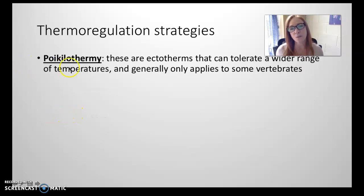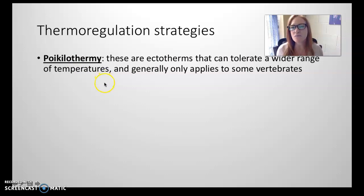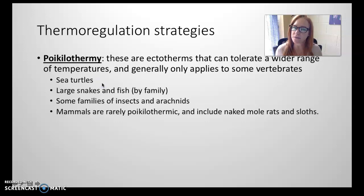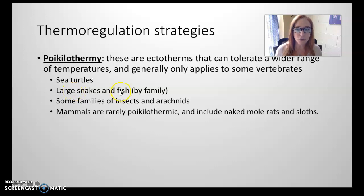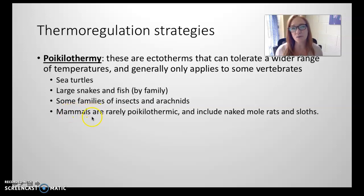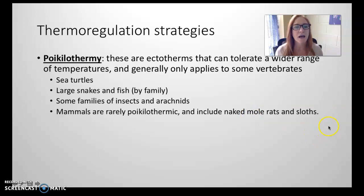Thermoregulation also includes a group called poikilotherms. These are ectotherms that have a wider range of temperatures at which they can function. Sea turtles are poikilotherms because they travel such a wide range in the ocean and need to function in warmer and colder waters. Larger snakes like anacondas, large fish like tuna, and a couple of insects and arachnids are also almost poikilothermic. Mammals are almost never poikilothermic — two exceptions are naked mole rats and sloths.